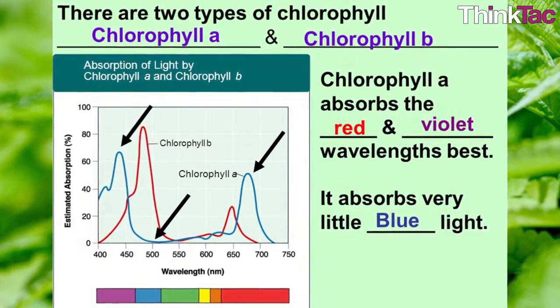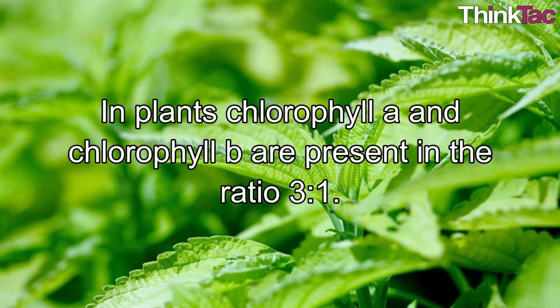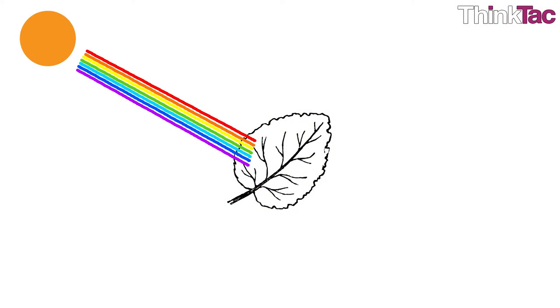In plants, chlorophyll A and chlorophyll B are present in the ratio of 3 is to 1. Thus, when white light falls on the chlorophyll-containing structures like leaves, green light is not absorbed but reflected and hence the objects appear green.